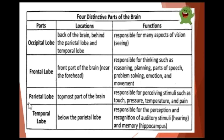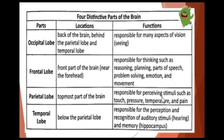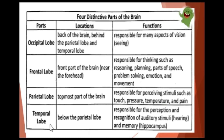Next, we have the parietal lobe. The location is the topmost part of the brain. Its functions are responsible for perceiving stimuli such as touch, pressure, temperature, and pain. Next, we have the temporal lobe, located below the parietal lobe.